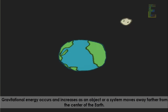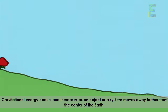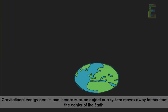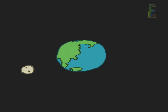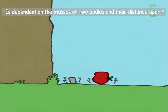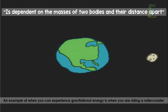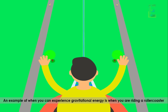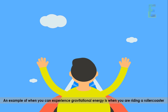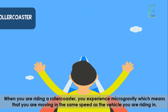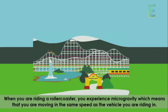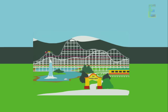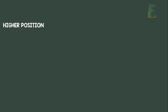Gravitational energy occurs and increases as an object moves further from the center of the Earth. It is dependent on the masses of two bodies and their distance apart. An example is riding a roller coaster — you experience microgravity, meaning you are moving at the same speed as the vehicle. When something is in a higher position, its gravitational energy is high.